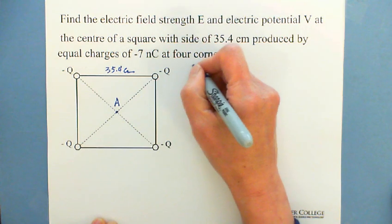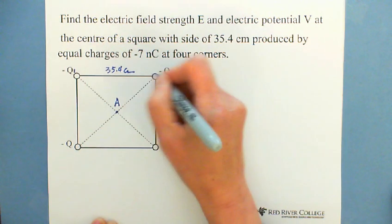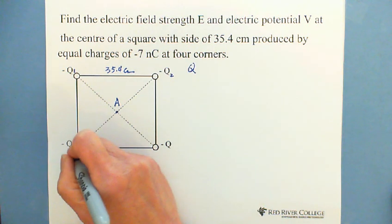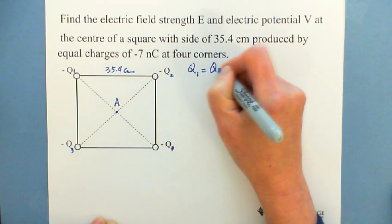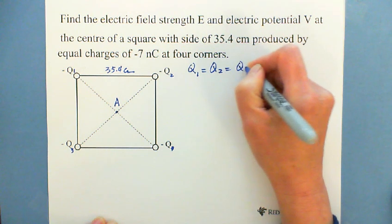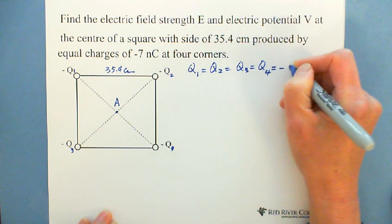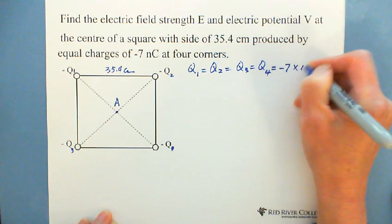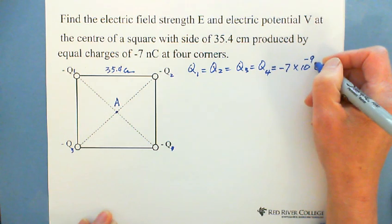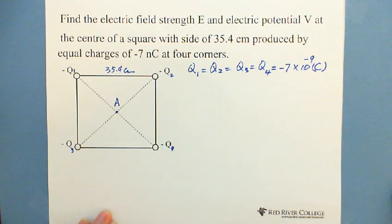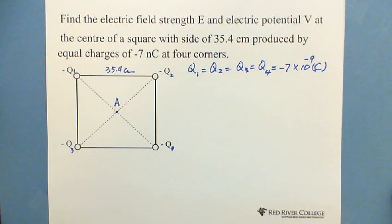So Q equals negative 7 times 10 to the negative 9 coulombs for each corner charge Q1, Q2, Q3, Q4. And each side is 35.4 centimeters.